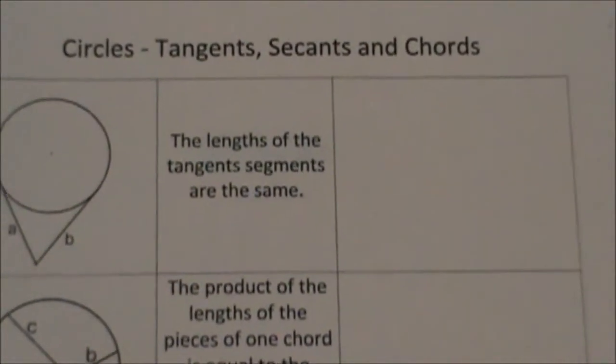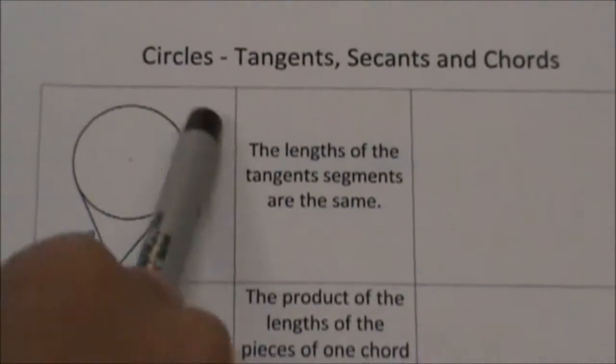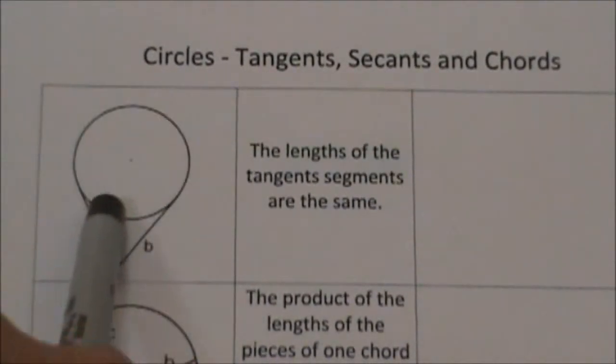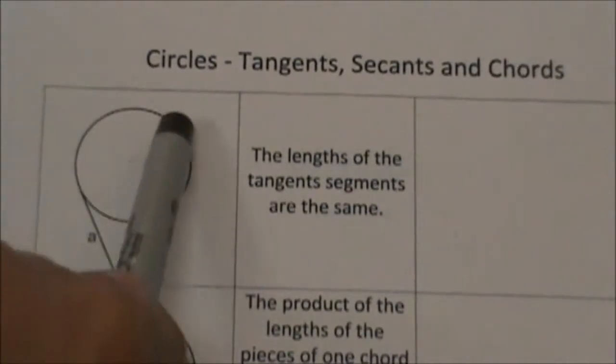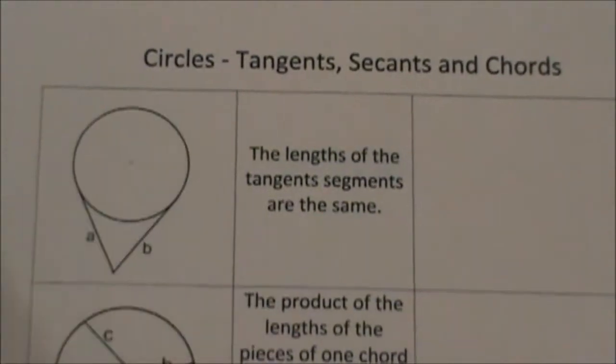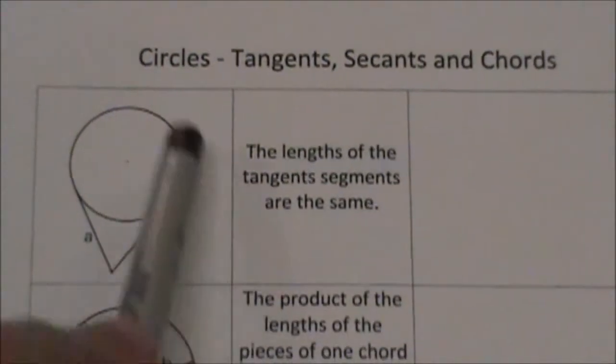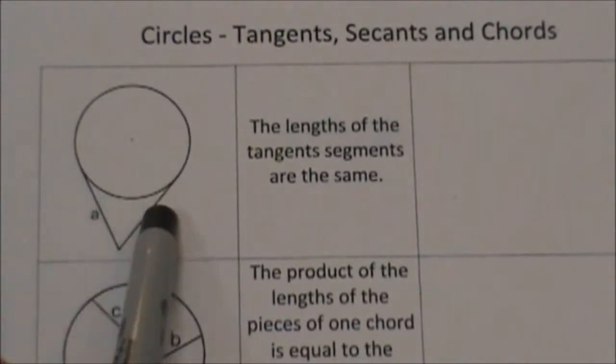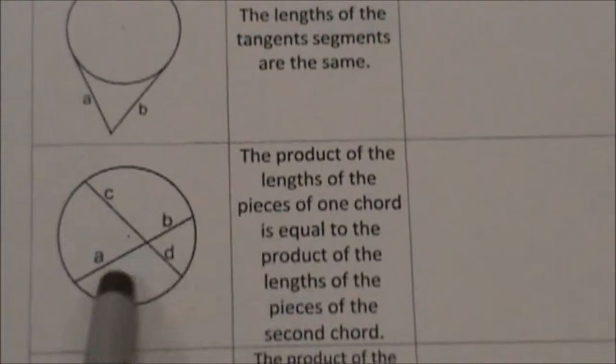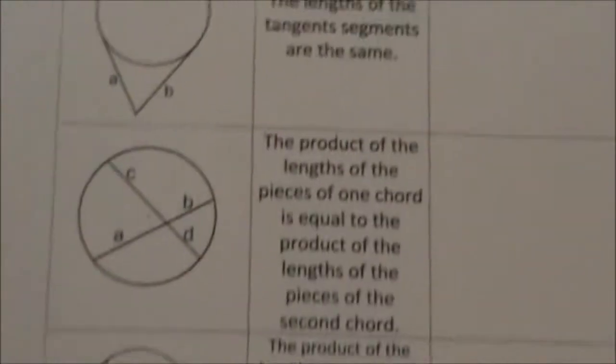The first one we're going to go through are the segments. We have circles and the last unit we concentrated on central angles, inscribed angles, angles that were in the circle and then angles on the outside. Well this one we're going to look at segments and the links associated with the tangents, chords, secants, and tangents.